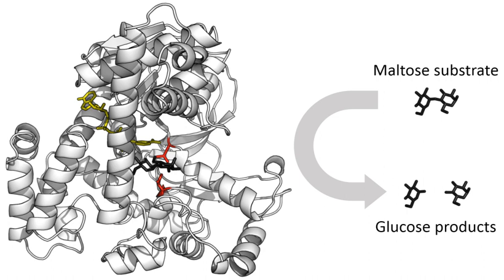The word enzyme was used later to refer to non-living substances such as pepsin, and the word ferment was used to refer to chemical activity produced by living organisms. Edouard Buchner submitted his first paper on the study of yeast extracts in 1897. In a series of experiments at the University of Berlin, he found that sugar was fermented by yeast extracts even when there were no living yeast cells in the mixture. He named the enzyme that brought about the fermentation of sucrose zymase. In 1907, he received the Nobel Prize in Chemistry for his discovery of cell-free fermentation.